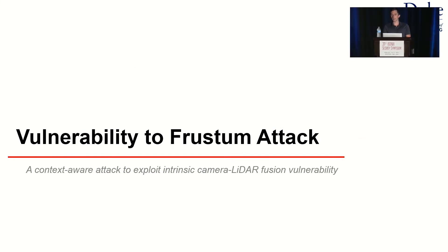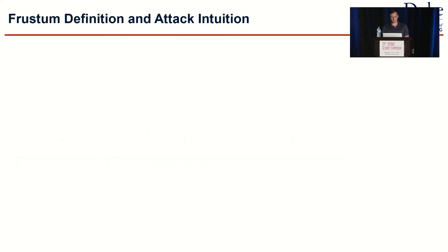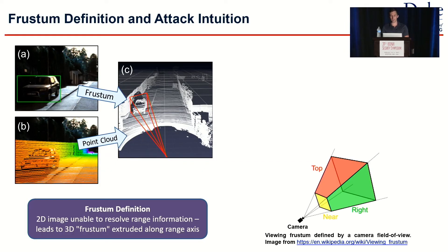Camera-LiDAR fusion is not actually a silver bullet against LiDAR attacks. We discovered a novel context-aware attack, which we call the frustum attack, that's able to compromise an intrinsic camera-LiDAR vulnerability. A frustum is defined by a 2D bounding box extruded out into three dimensions. A camera can only resolve angles in 3D space — it's a two-dimensional projection of the 3D world. If there's a bounding box in the camera image and you try to extend it into three dimensions, there's uncertainty along the range axis. That shape created by extruding the 2D box into 3D is called a frustum.